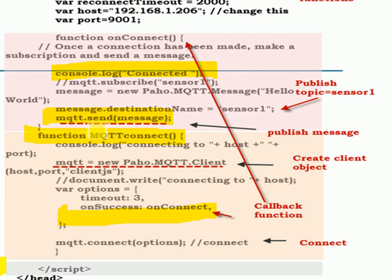You'll find a lot of scripts incorporate the publish and subscribe as part of the onConnect function — once we're in the onConnect function we know we've connected, so we're safe to subscribe and publish. All I've done here is publish the message. You can see there is a subscribe call which I've commented out, so I'm not using that in this first script. This script will connect to the broker, log a message, call the onConnect callback, log a connected message, and then publish a message — that's all.